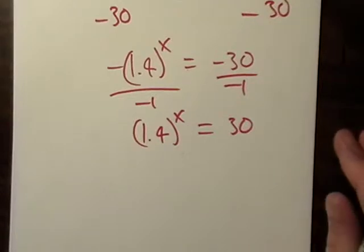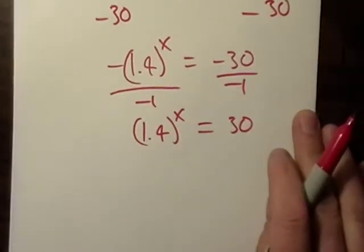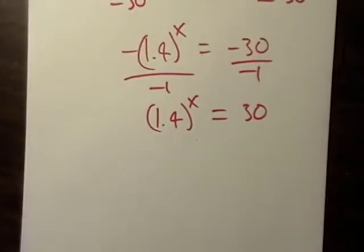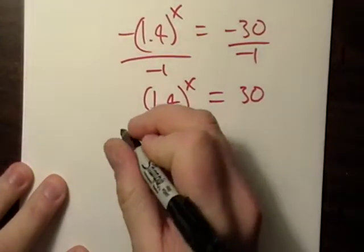We can divide both sides by negative 1 and end up back to the positive numbers. So, what are we going to do now? Now, we have this variable tied up in the exponent. So, I have half a mind to take the natural log of both sides. That's what I think I'm going to do.